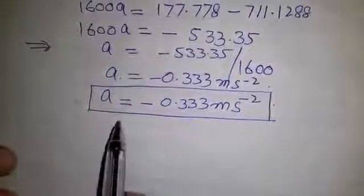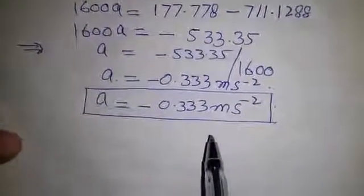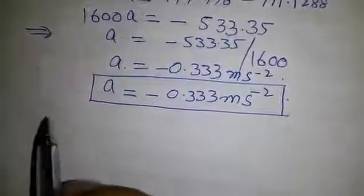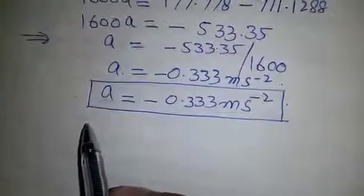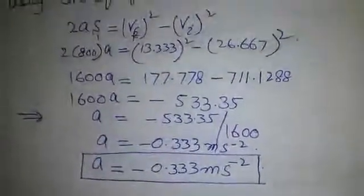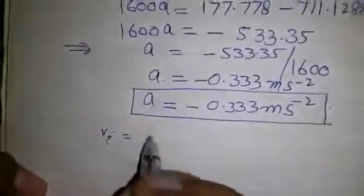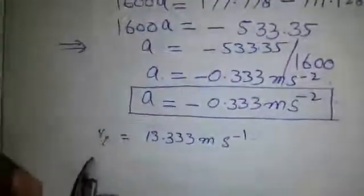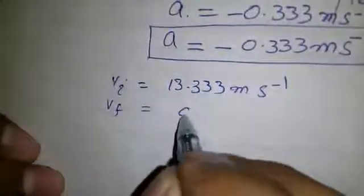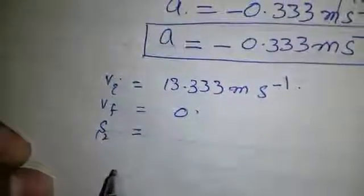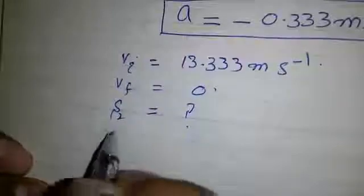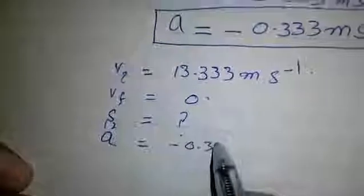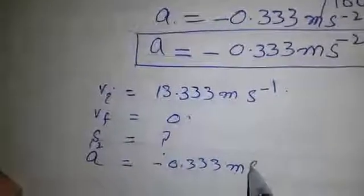The first part is completed as we found the acceleration. Now we have to find the distance travelled by the train after applying the brakes. When the brakes are applied, the initial velocity becomes 48 km per hour, which is equal to 13.333 meter per second. Vf is equal to 0, and its acceleration is minus 0.333 meter per second per second.